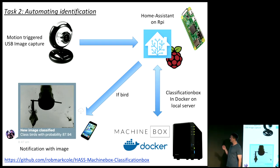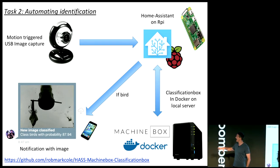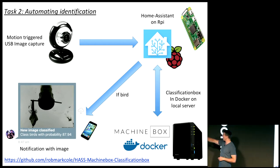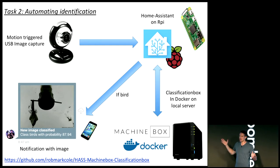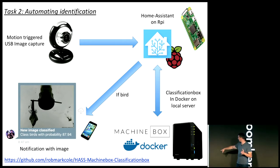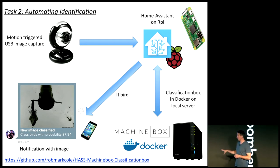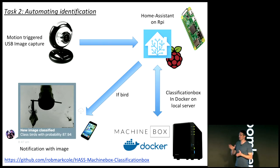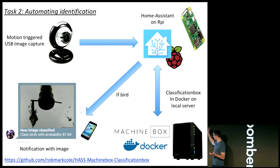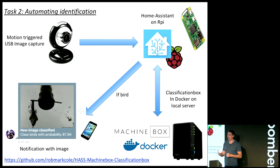The next task was integrating that into Home Assistant. On the top left of my diagram there's the USB webcam — motion is detected, it captures an image. Home Assistant, running on a Raspberry Pi, has a component which detects when an image has been saved in a folder, and will then post that image over the local network to Machine Box, which has the classifier running in Docker — in my case on a local Synology server. That performs the classification and returns the result to Home Assistant. I have an automation which says: if the chance that there's a bird in the image is greater than 80%, send me that image. If there's a bird, it posts the photo to my phone with a notification.